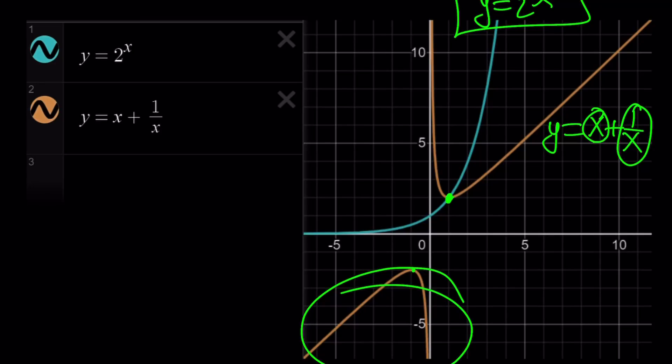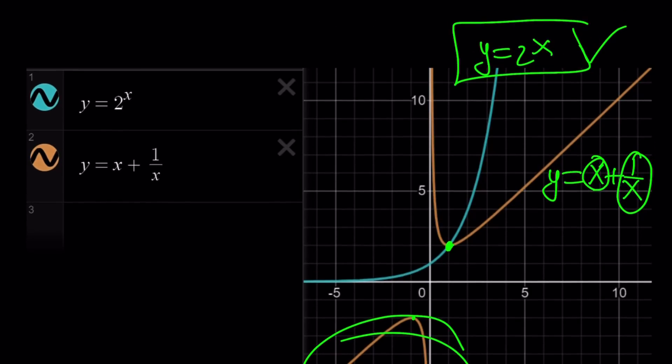Because obviously, 2 to the power x is going to grow much faster than this function. So as x approaches infinity, this is going to be super small. This is going to look like y equals x, which is a linear function. So obviously, exponential is going to grow much faster than the linear looking function. And we're going to have a single intersection point, which is going to be at 1, 2.